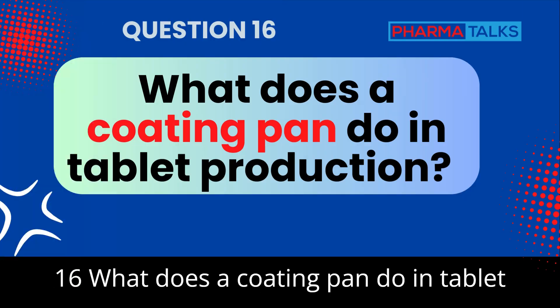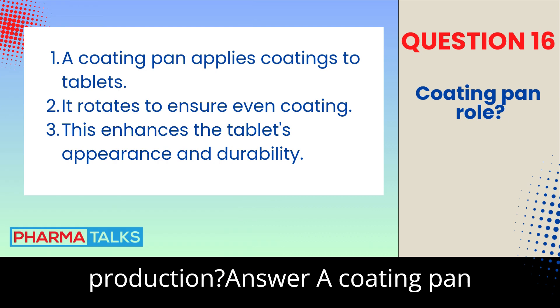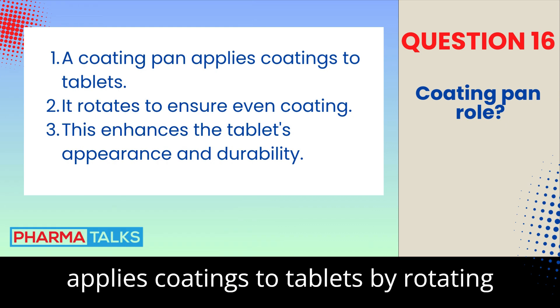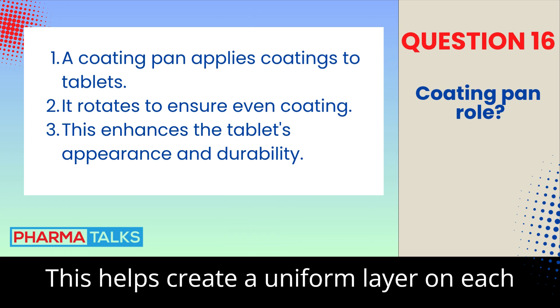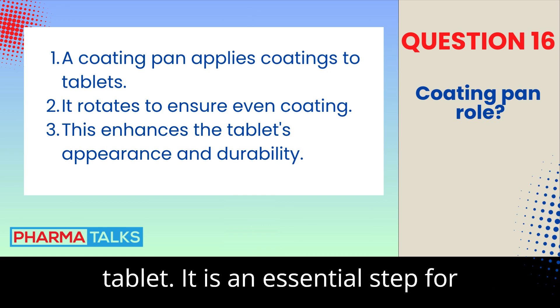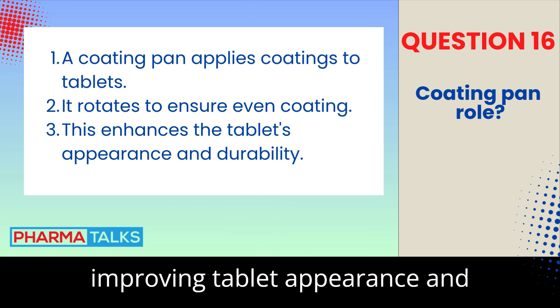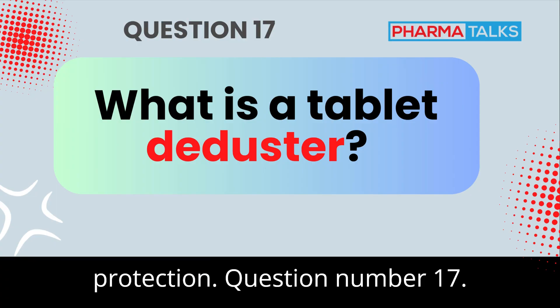Question 16: What does a coating pan do in tablet production? A coating pan applies coatings to tablets by rotating them while spraying a coating solution. This helps create a uniform layer on each tablet, and is an essential step for improving tablet appearance and protection.